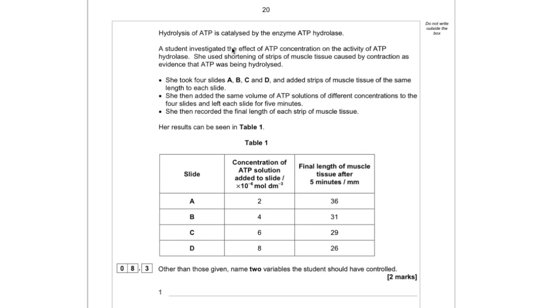So all this is really is we're doing an experiment into the effect of substrate concentration on enzyme activity. The substrate being our ATP and the enzyme being our ATP hydrolase. She used shortening of strips of muscle tissue caused by contraction as evidence that ATP was being hydrolyzed. So there must be some sort of link between ATP hydrolysis, probably the energy and causing the muscle to contract.